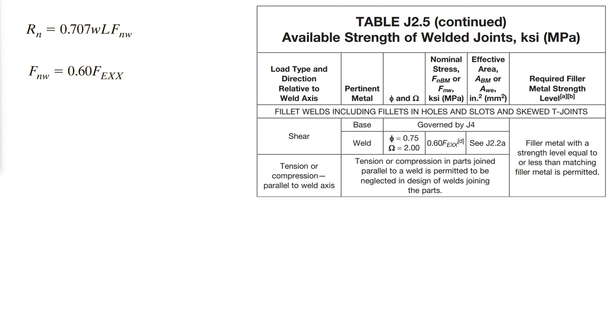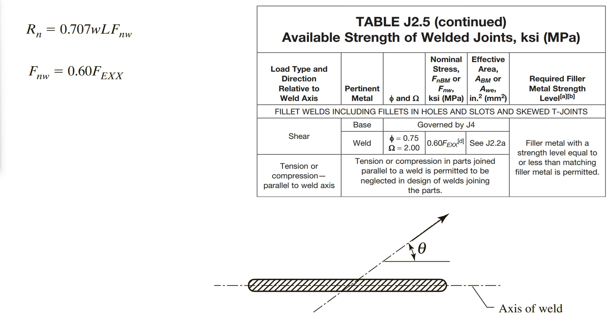AISC section J2.4 presents an alternative strength that accounts for the direction of the load for fillet welds where strain compatibility of the various weld elements is considered. If the angle between the direction of the load and the axis of the weld is denoted theta, the nominal fillet weld strength is the following. We can see that if the angle theta is zero, the ultimate shearing stress remains the same, but when it is 90 degrees, the strength is 50% higher.